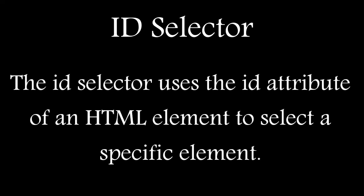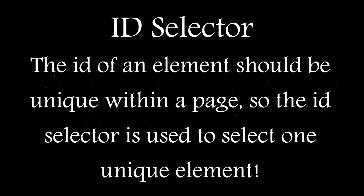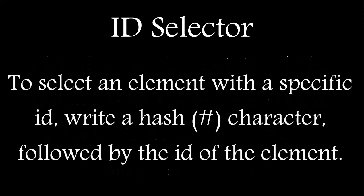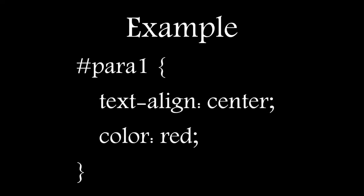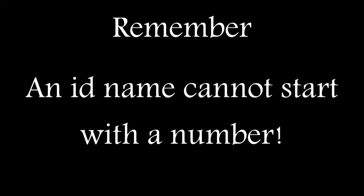ID selector: The ID selector uses the ID attribute of an HTML element to select a specific element. The ID of an element should be unique within a page, so the ID selector is used to select one unique element. To select an element with a specific ID, write a hash character followed by the ID of the element. This style rule will be applied to the HTML element with ID equals 'par1'. Remember that an ID name cannot start with a number.